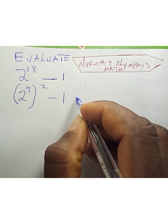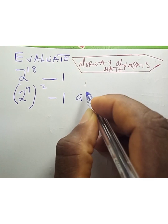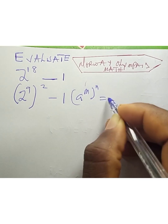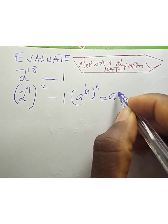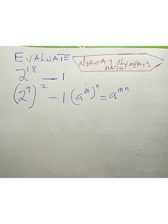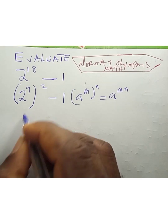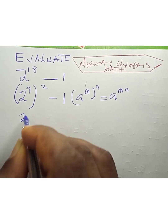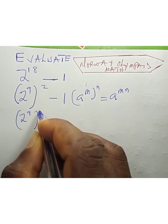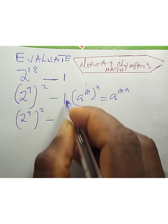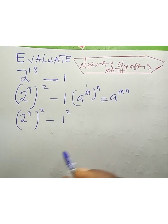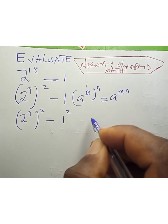Remember that a raised to power m, raised to power n, equals a raised to power mn. So we can also write 2 raised to power 9, raised to power 2, minus 1, which can be written as (2⁹)² minus 1². Remember the formula for a squared minus b squared.